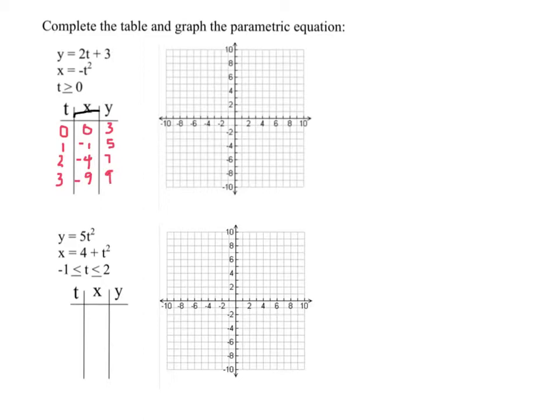Well, now I graph these coordinates. Remember, this is the path of something. t does not appear on the graph. So we've got the point 0, 3 in here. Negative 1, 5. Negative 4, 7. And negative 9, 9, like that. So it kind of looks like this.